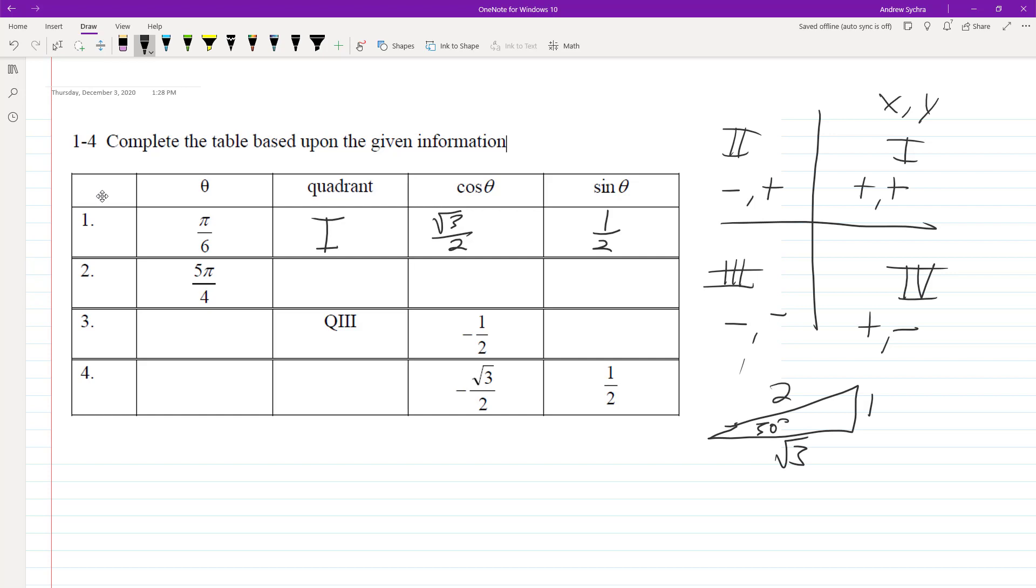Okay, so then pi over 6, what that is is it's down here. It's a 45 degree, 45 degree angle. Downward, so it's going to be equal to, so it's quadrant 3.